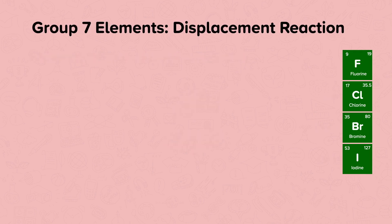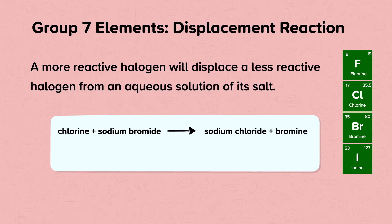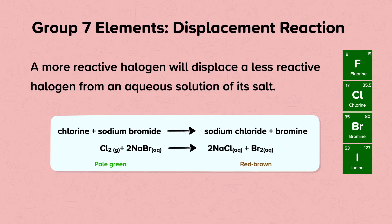A more reactive halogen will displace a less reactive halogen from an aqueous solution of its salt. If we have chlorine and sodium bromide, we will produce sodium chloride and bromine. Chlorine is more reactive than bromine, so the chlorine will displace the bromine from the sodium bromide and replace it. Cl₂ plus 2NaBr gives a pale green solution, and the product produces a red-brown solution.